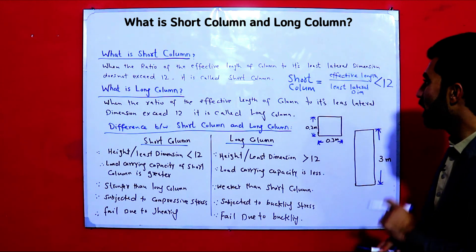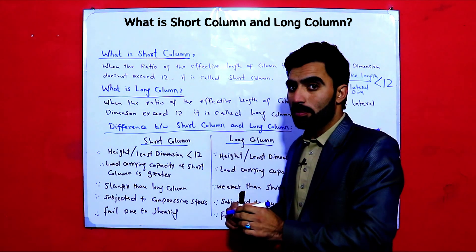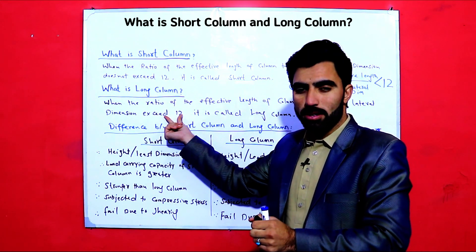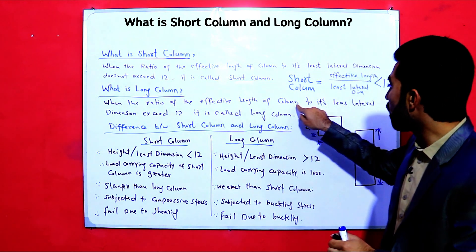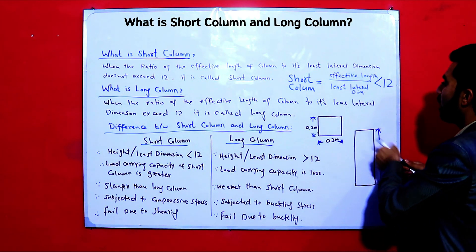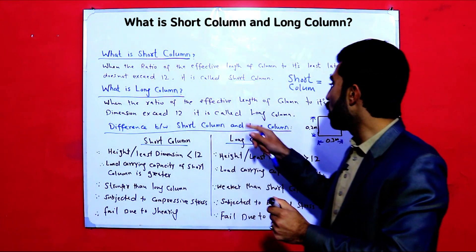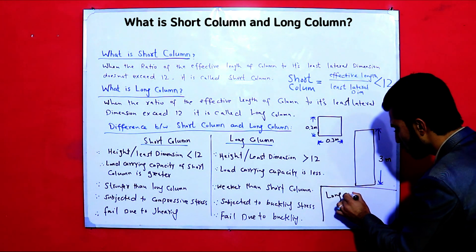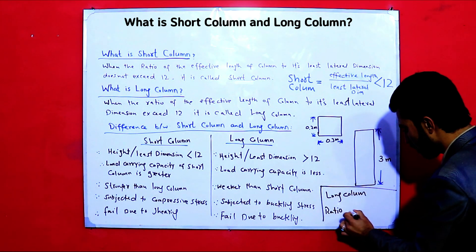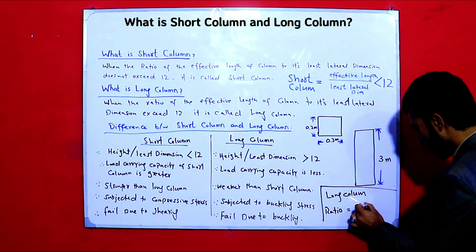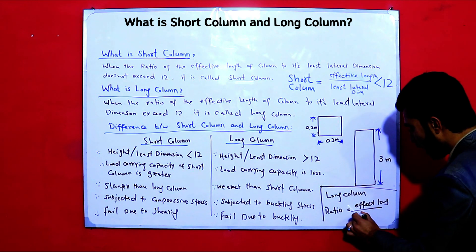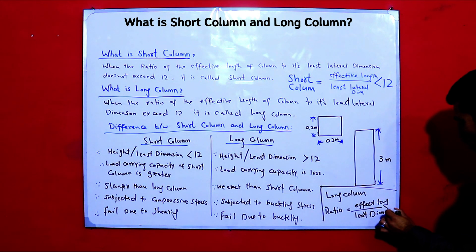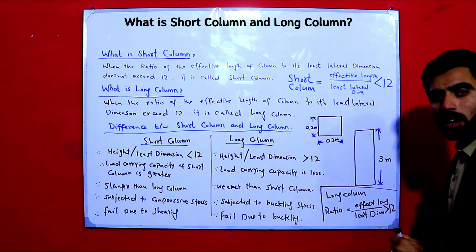Now, for the long column, it is the same concept but the ratio exceeds 12. When the ratio of the effective length of the column to its least lateral dimension exceeds 12, it is called a long column. So: effective length divided by least lateral dimension — when this ratio is more than 12, it is a long column.